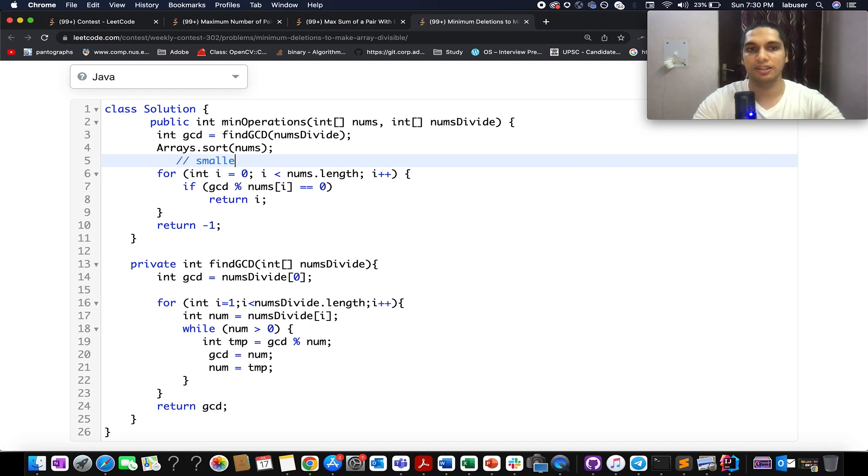I sort the nums array that I have and I start from the lowest value after the sorting operation. We iterate over the sorted array and we check if my current element divides the GCD. If that divides, then we simply return that ith index because all the elements prior to the ith index should be deleted. Once we are done with this for loop, we simply return minus one in most cases.